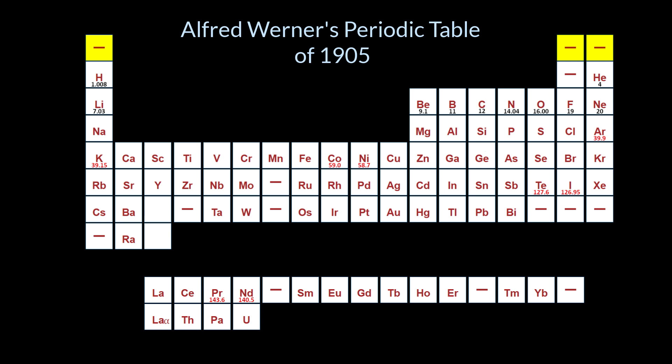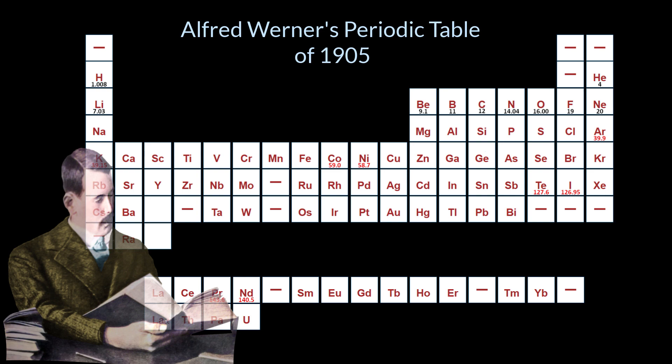Look at how Werner left spaces for elements he thought would be discovered. Three lighter than hydrogen, and one between hydrogen and helium. There were plenty of problems, and Moseley was about to solve them.